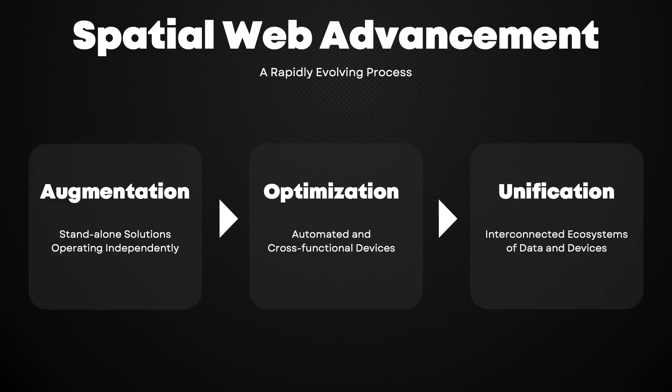The next phase, Optimization, is marked by devices that are automated and cross-functional. Technology will be able to draw insights from external data sources and independently make decisions. When you set your morning iPhone alarm, your Nest Thermostat should know to start heating up the house before you wake up, and your car should start defrosting before your daily commute. These seemingly small innovations remove yet another task that you'd have to otherwise think about and dedicate your attention to.